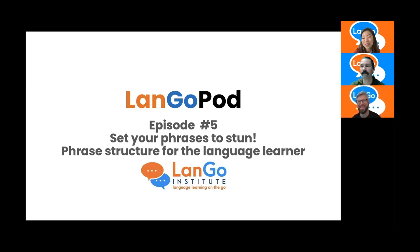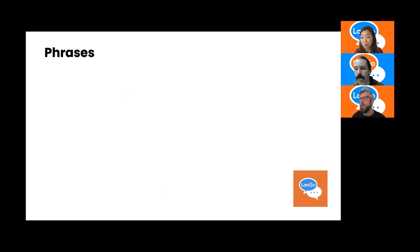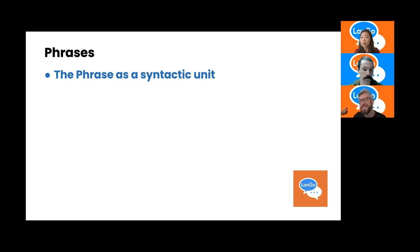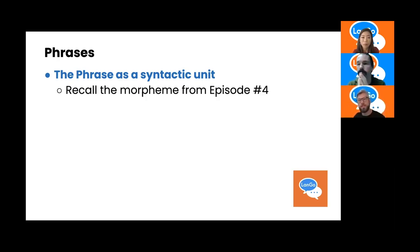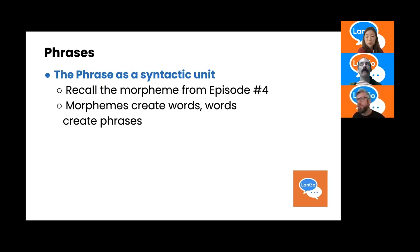Today we are going to set your phrases to stun, because we're studying phrase structure for the language learner. So we'll start with: what even is a phrase? A phrase is a syntactic unit — syntax being the arrangement of elements in a sentence or utterance. Recall from Episode 4 the notion of the morpheme: morphemes are used to create words, and words create phrases.